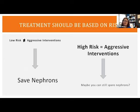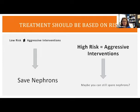Treatment should be based on risk. Low-risk or low-grade disease should not equal aggressive interventions. Instead, we should save nephrons — the functional units that make up a kidney. High-risk disease warrants aggressive interventions with curative intent. However, there is some question about whether we can still spare nephrons even in patients with higher-risk disease.